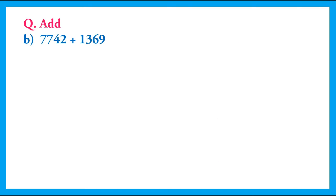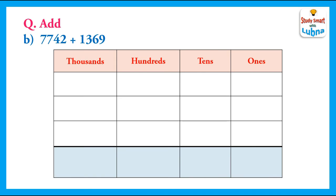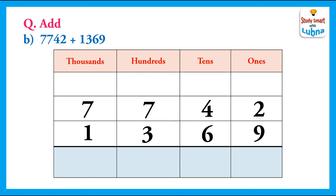Another example. Here we have to add 7742 and 1369. We will write the given 4-digit numbers below their place values: 7742 and 1369. After this we will put the addition symbol because we are going to add them.